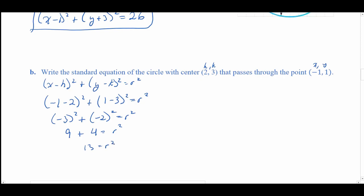Now that we know r² = 13, we go back to the standard form circle equation: (x − 2)² + (y − 3)² = 13. There we have our standard form circle equation for this particular problem.